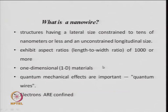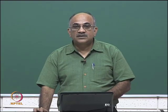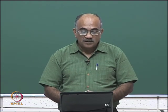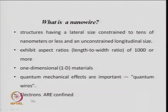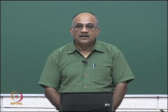When there is a constraint along certain axes — in this case two axes — the size is restricted and quantum mechanical effects arise. Hence nanowires are also called quantum wires if the dimensions are so small that quantum properties are exhibited. Typically nanowires with diameters of 10 nm or less show quantum effects. The most important thing confined due to size is electrons — confining electrons changes the properties of the material dramatically compared to a material where electrons are not confined.